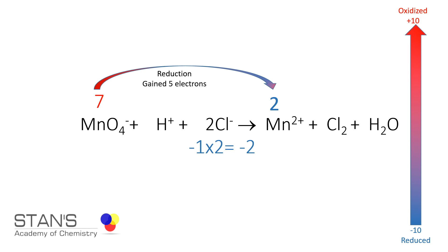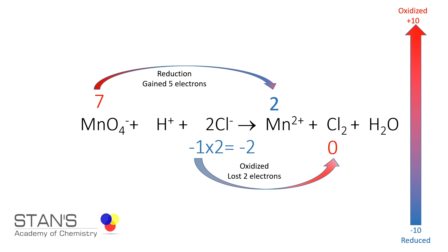The chloride on the reactant side has an oxidation number of minus one. Taking two chloride ions gives a net oxidation number of minus two, since we need to produce one mole of chlorine molecule. Atomic chlorine has an oxidation number of zero, so there is an increase in oxidation number from minus two to zero — two moles of electrons are lost during oxidation.